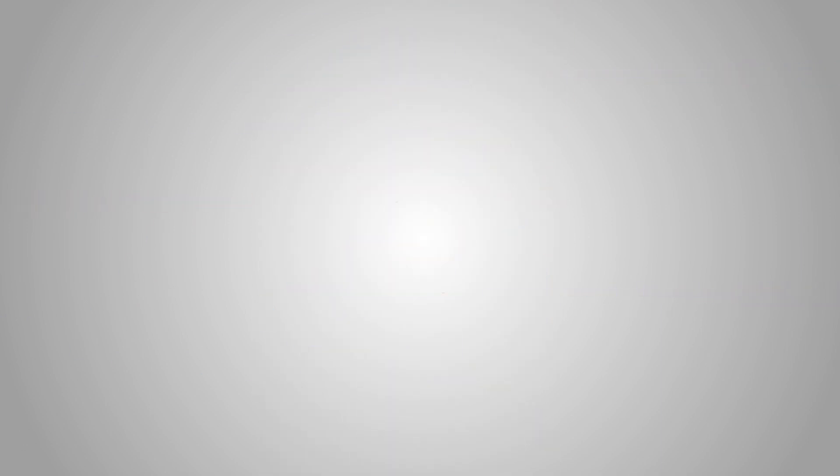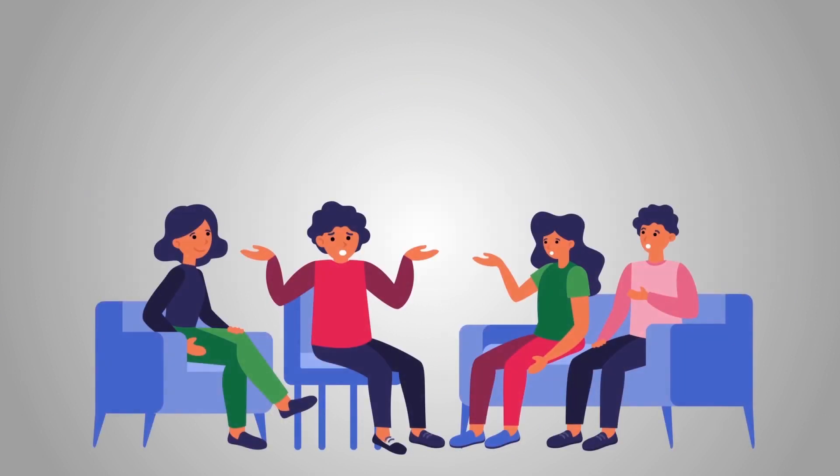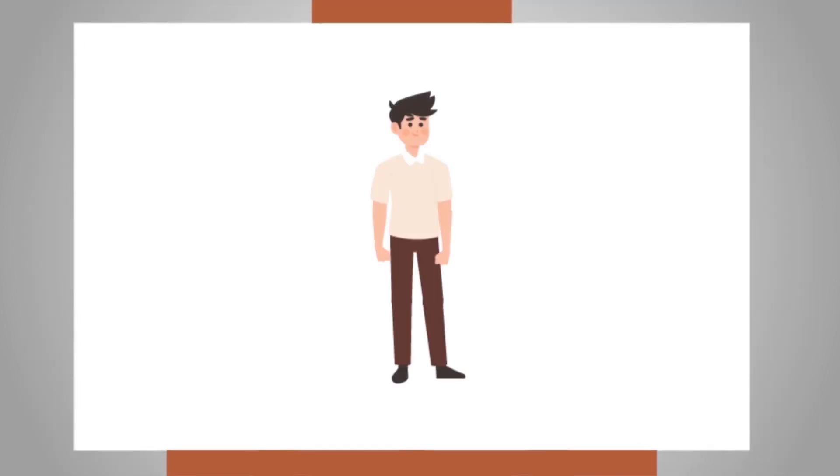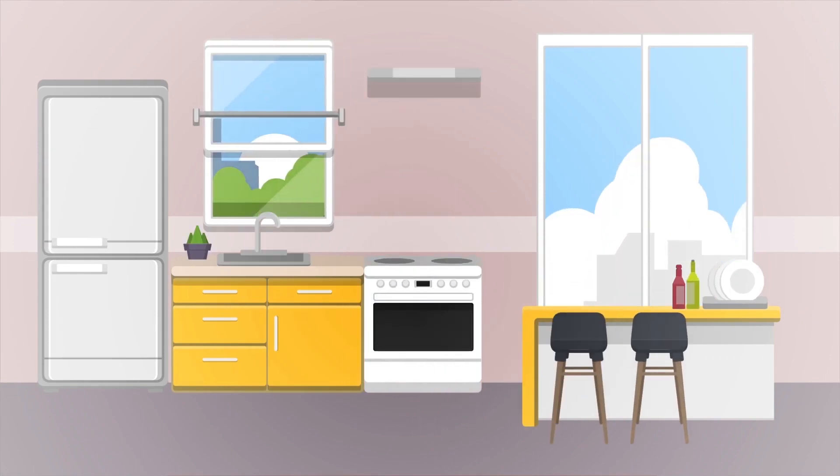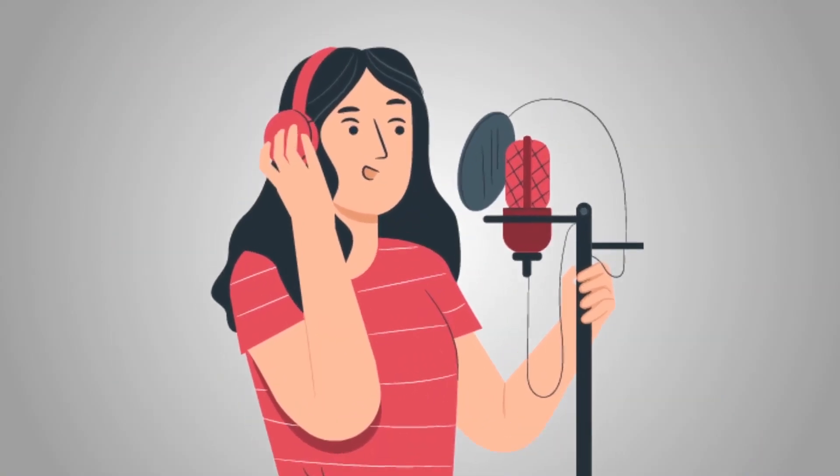During this stage, the animation team develops the story and writes the script of the animation, designs the characters, creates a storyboard, chooses the color palettes, prepares the backgrounds, and records the voiceover. Once we get all the elements required, we move to our next stage, which is production.